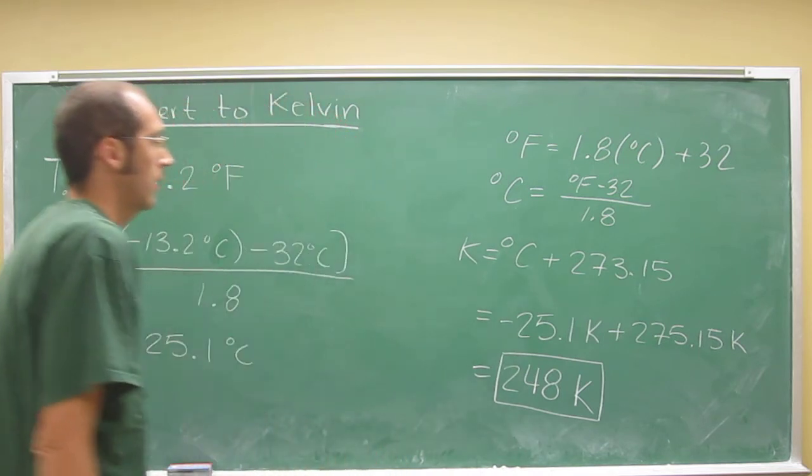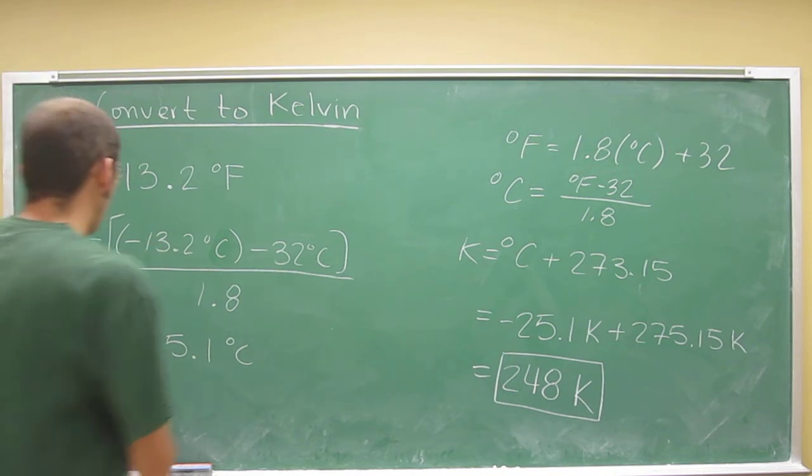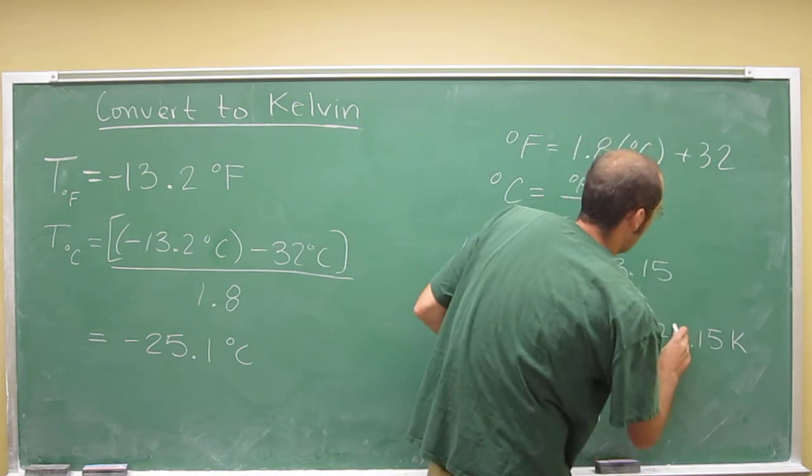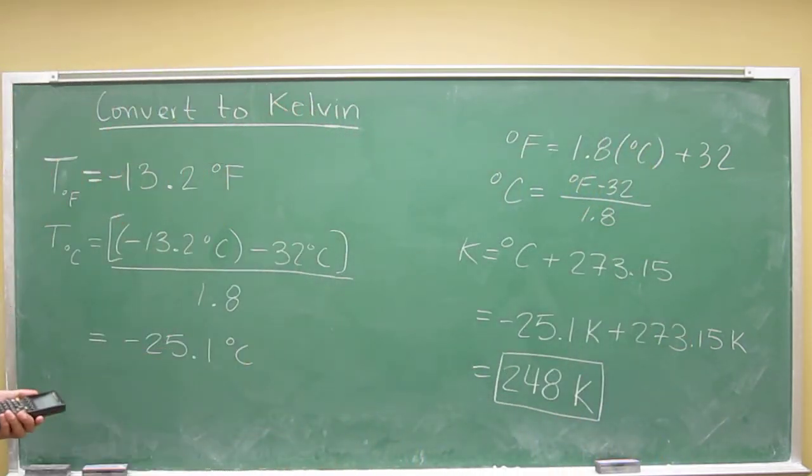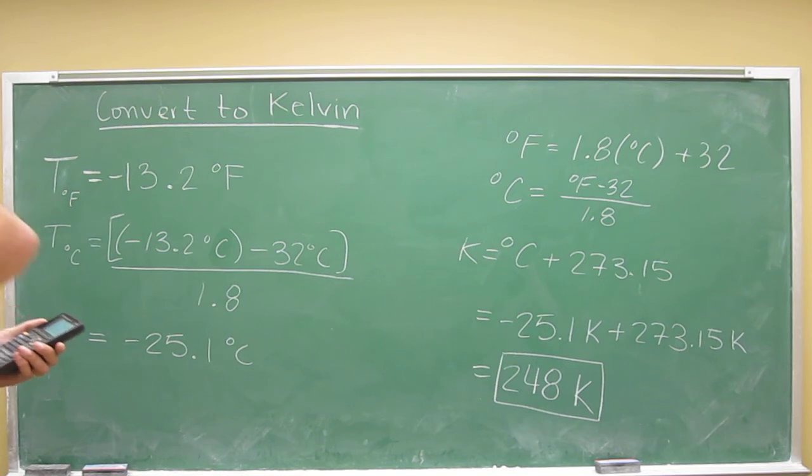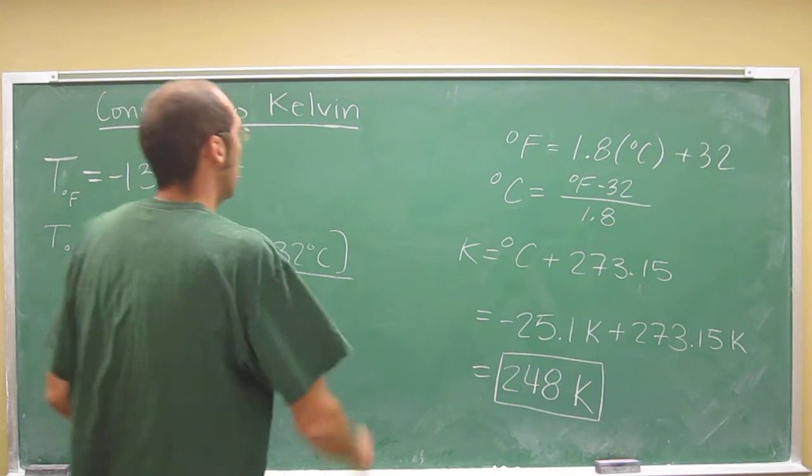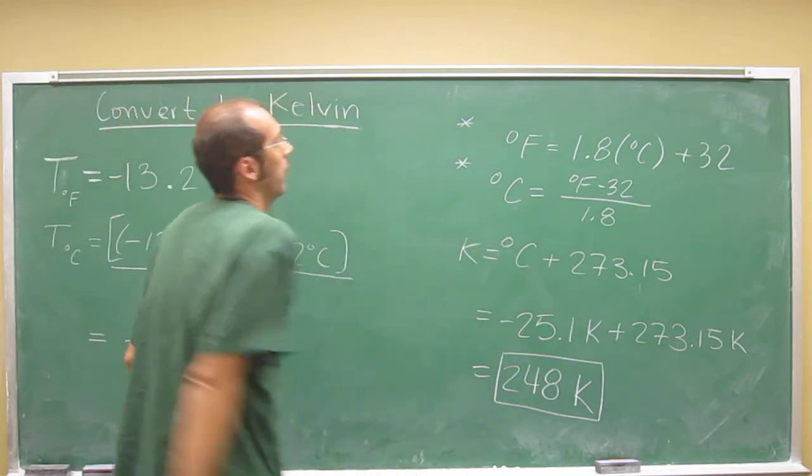And you would expect it to be less than 273.15 because that's a negative number, right? So you'd have to remember both of those formulas.